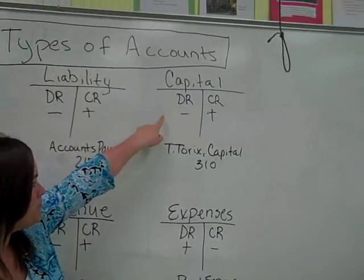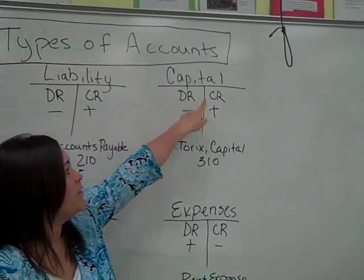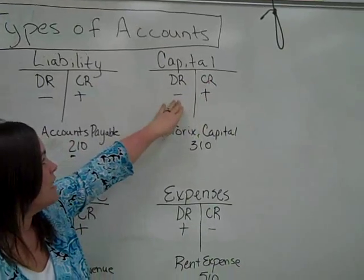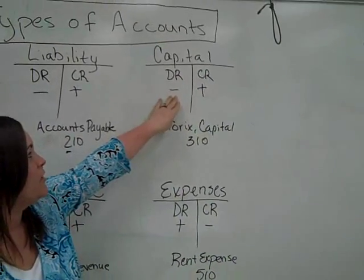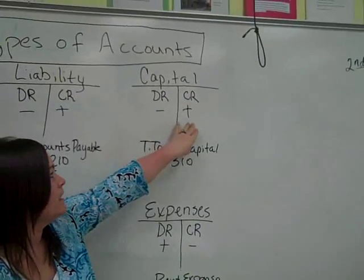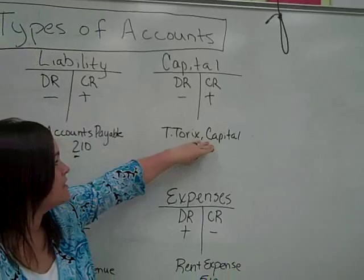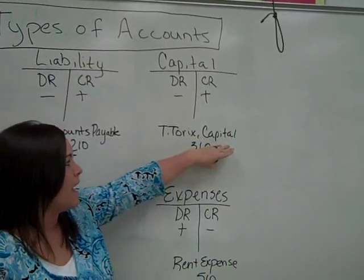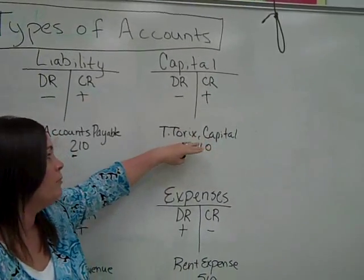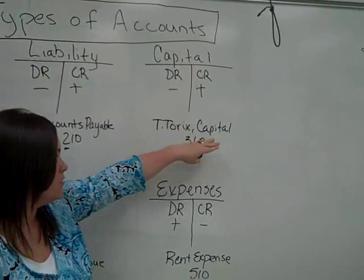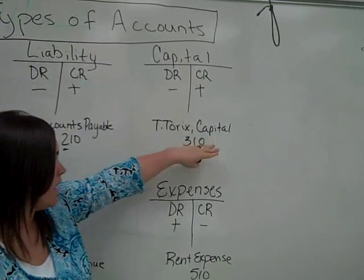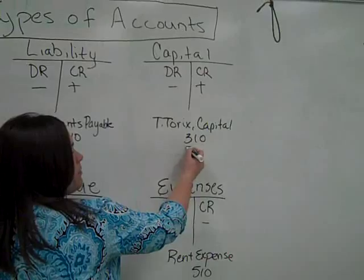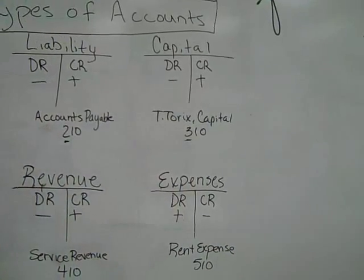Moving on to capital: debit and credit are always left and right. The debit for capital is a decrease, and the credit is an increase. An example account would be the owner's name followed by capital — in this case, T. Torix, Capital. Capital accounts all start with a three.